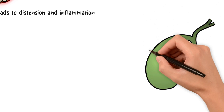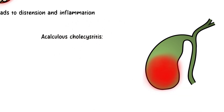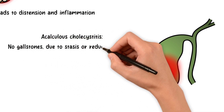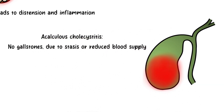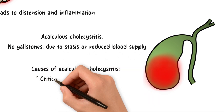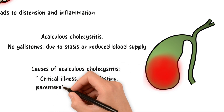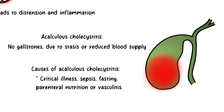Interestingly, acute cholecystitis can also occur without gallstones. This form, known as acalculous cholecystitis, is often due to factors such as gallbladder stasis and reduced blood supply, which can lead to tissue damage and inflammation. This can be caused by critical illness, sepsis, prolonged fasting, parenteral nutrition, or vasculitis.